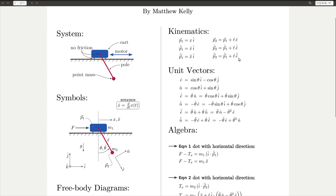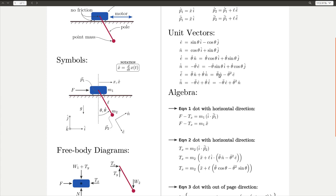Now, finding e hat double dot is a little bit tricky, and that's what this whole section here is about. We start by finding an expression for e hat and n hat in terms of theta and the inertial reference frame, i or j.